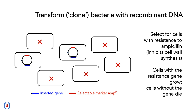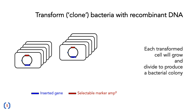The trick is to plate the cells out on medium containing ampicillin. This selects for cells with resistance to ampicillin — those that contain the plasmid and the selectable marker, the AmpR gene, which inhibits the ampicillin that breaks down the cell wall. Cells with the resistance gene grow, and those without the gene die. In this case, only two of those cells can propagate and grow to form a bacterial colony that we can then use.